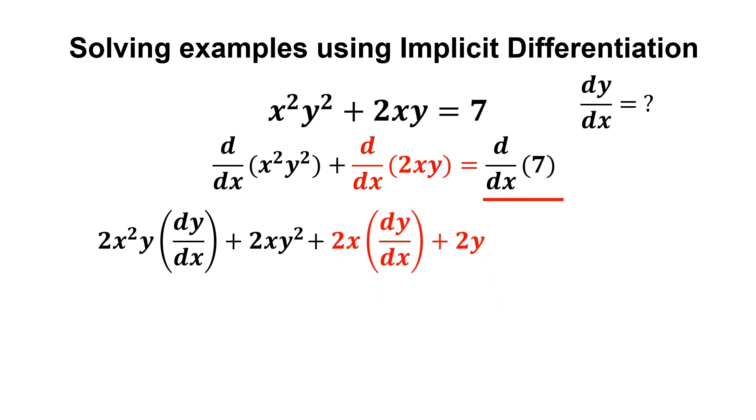Lastly, differentiate 7 which is a constant, we get 0. And we are almost done. All we're gonna do now is to solve for dy/dx by rearranging the equation. We group the terms with dy/dx together, so we bring these two terms to the other side.